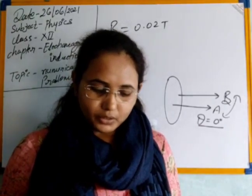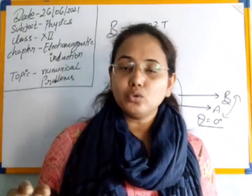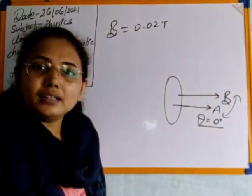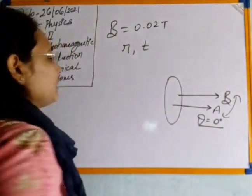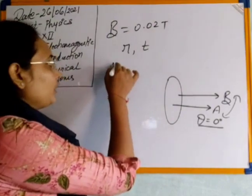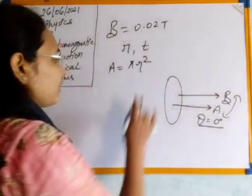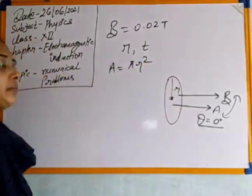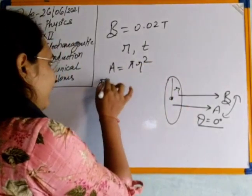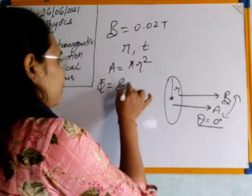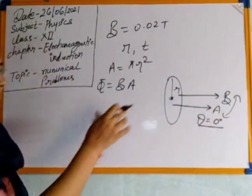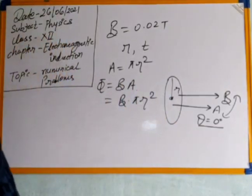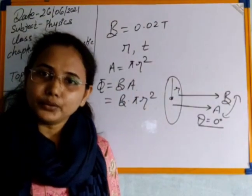We have to find the induced EMF when the radius is 2 centimeters. At any instant t, suppose the radius is r. The area of the circular loop at that time is A = πr². The flux at that time is phi = B × A = B × πr², since theta = 0 and cos(0) = 1. So phi = Bπr².